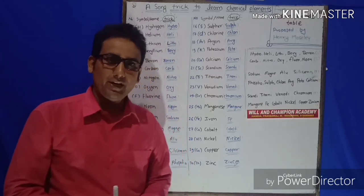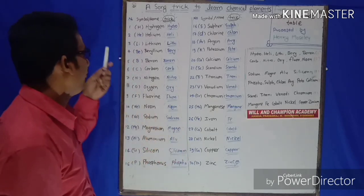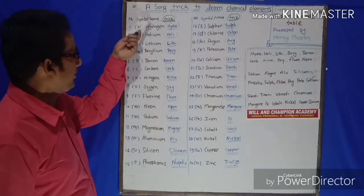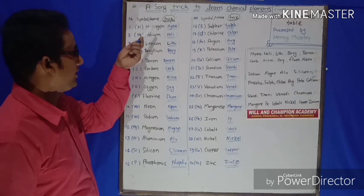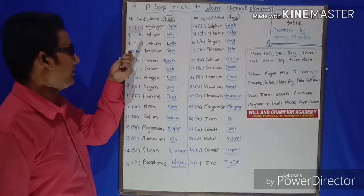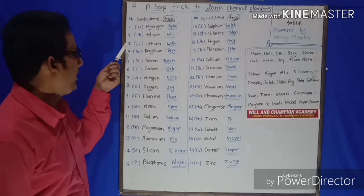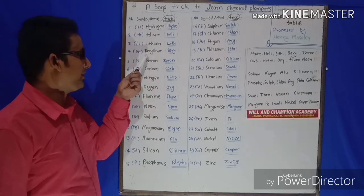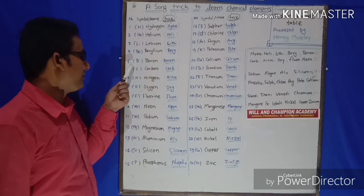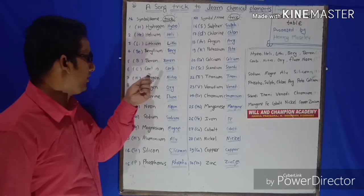Here we go with symbols, names, and tricks. H stands for Hydrogen, say Hydro. He stands for Helium, say Heli. Li stands for Lithium, say Lithi. Be stands for Beryllium, say Beri. B stands for Boron, say Boran.